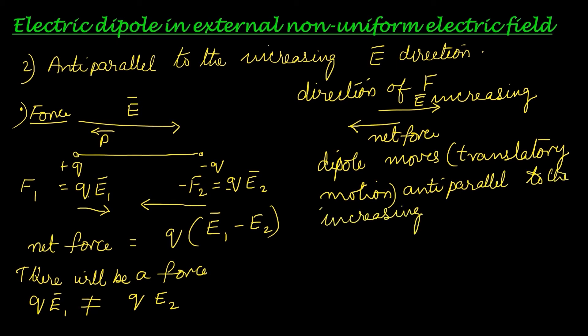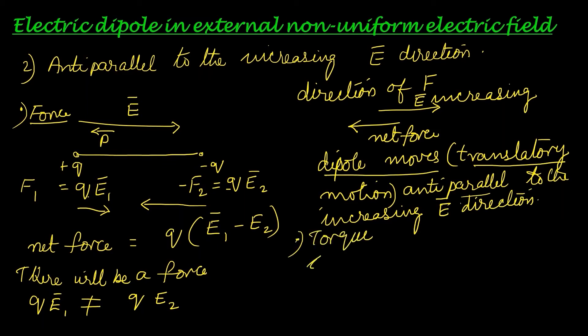Regarding torque: τ = pE sinθ. Here θ = 180° because the dipole is resting anti-parallel to the field, and sin 180° = 0, so torque is zero. The dipole does not rotate; it only experiences translatory motion, just as in the previous case where it was resting parallel to the increasing electric field direction.